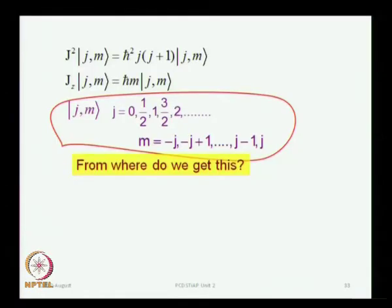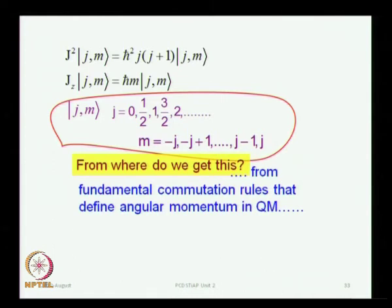We will also talk about angular momentum matrices. The question from last time was: you have J² and Jz, which can be simultaneously measured. The eigenvalues of J² are ℏ² j(j+1). We learned that j can take values 0, 1/2, 1, and so on — including half-odd integers. For each j, m can take 2j+1 values going from -j to +j in steps of 1.